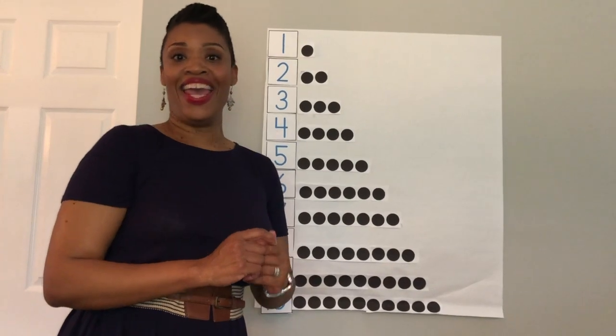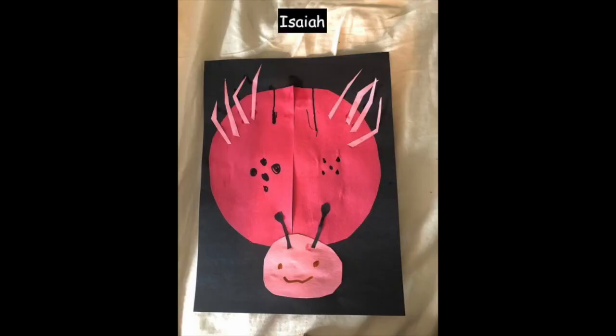Last week we read Ten Black Dots and I asked you to create your own creations. Isaiah created a ladybug. Can you count the number of dots that he has on his ladybug? I have circled some on the left and some on the right. Let's count the ones on the left.